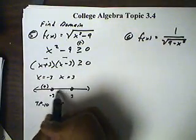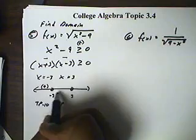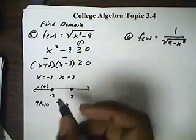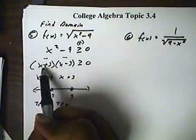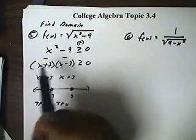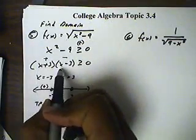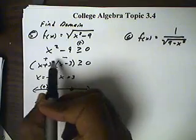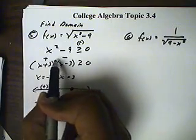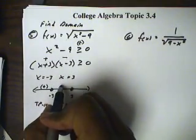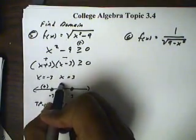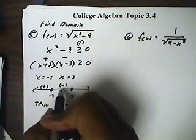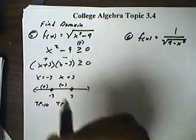Now when I use a test point between negative 3 and 3, let's use zero. Zero plus 3 is a positive answer. Zero minus 3 is a negative answer. So positive times negative gives us negative answers. All the answers within here are negative, so we don't need anything here because we're looking for positive answers.